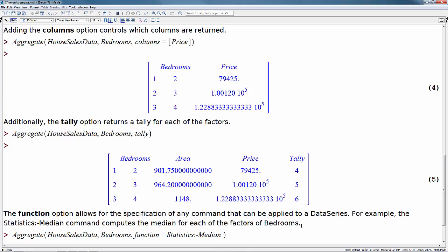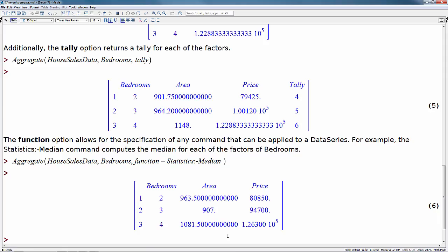The function option allows for the specification of any command that can be applied to a data series. For example, the statistics median command computes the median for each of the factors of bedrooms. So we can see this now, and we'll just add in function equals statistics median. And we run this, and we can see that these values have now changed.